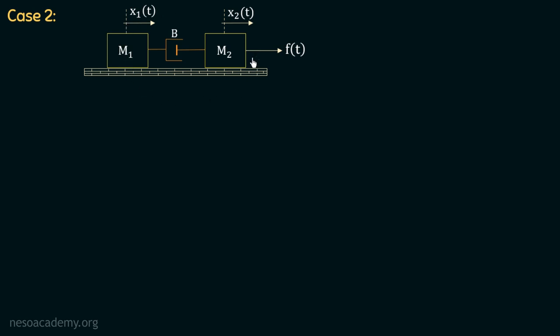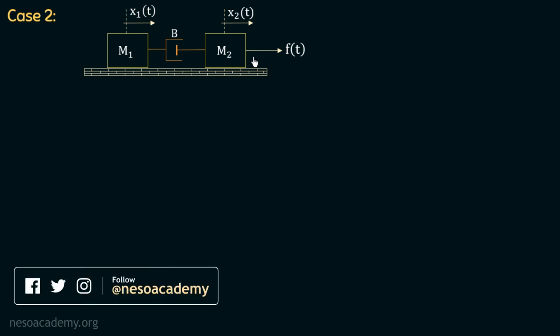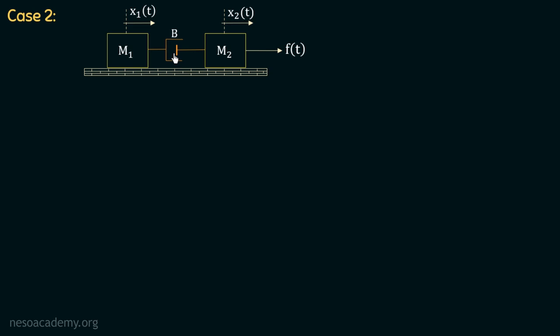Starting with step one, there are two different displacements: x1(t) and x2(t). In step two, mass M1 has displacement x1(t), mass M2 has displacement x2(t), and the damper has effective displacement x1(t) minus x2(t) — giving three elements with different displacements. Moving to step three, we represent x1(t) and x2(t) with separate nodes, each with its own reference level.